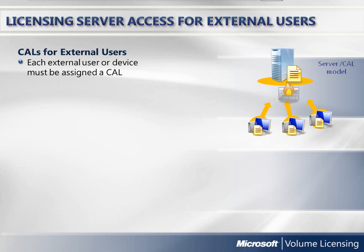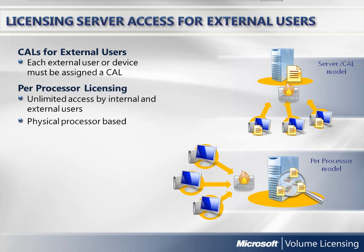CALs can be an easy and economical option for internal employees and contractors to access Microsoft technology. However, some solutions need information to be available to individuals outside your organization. Microsoft has licensing options for you to do that. The first option is buying CALs for authenticated users — for known external users, you can buy CALs assigned to those users or devices to access your servers. The second is per processor licensing, which provides the right to use the server software by any internal or external user, and includes SQL Server 2008.